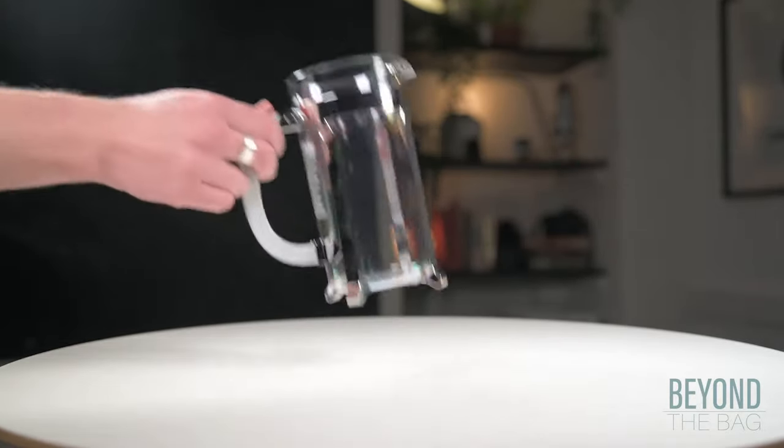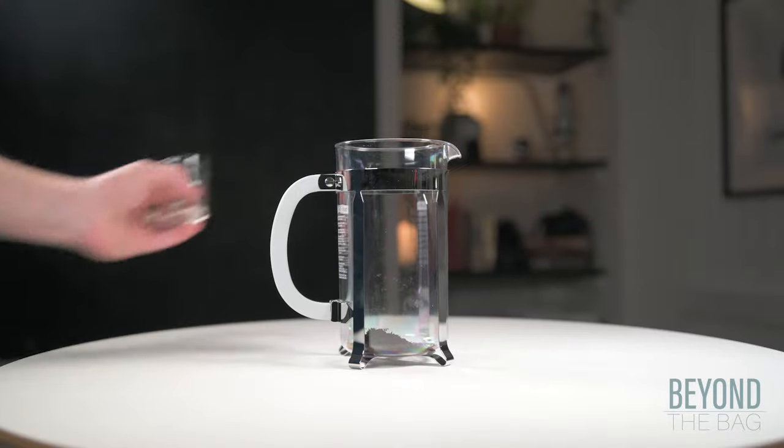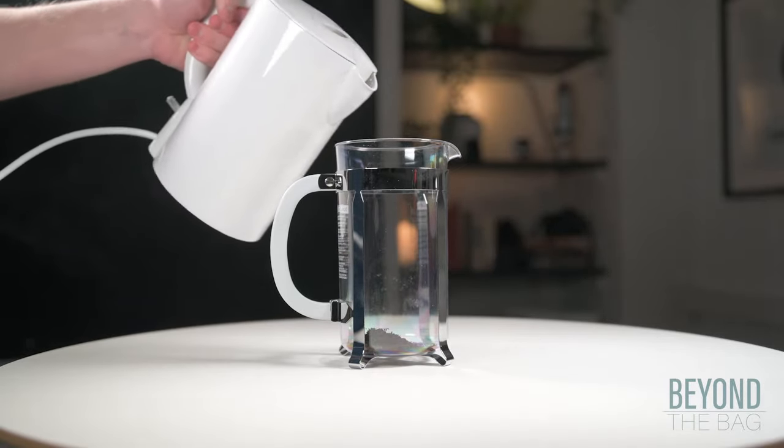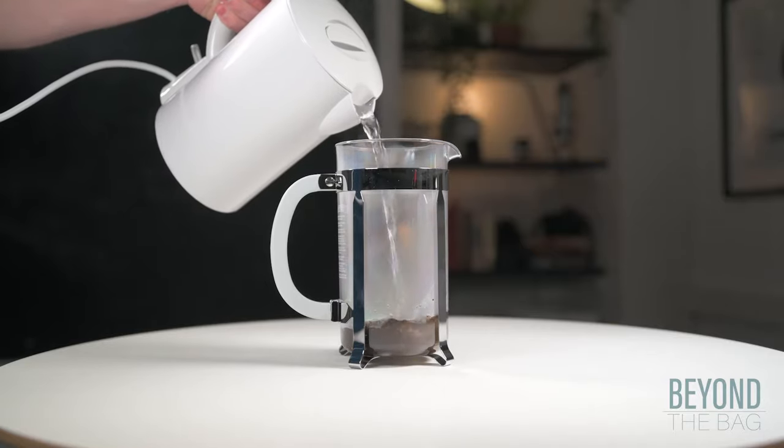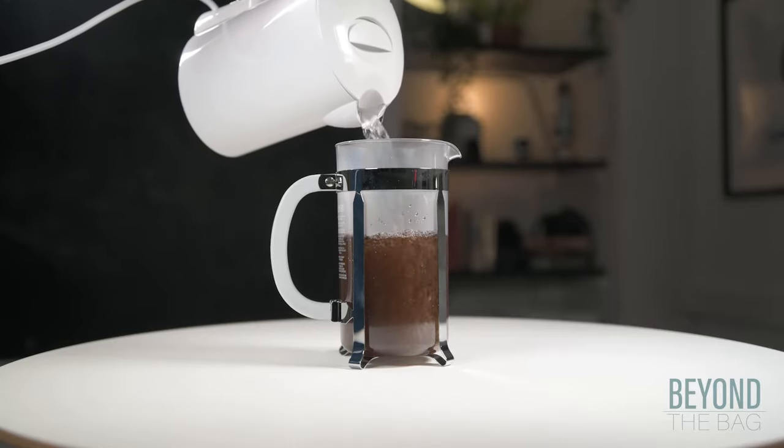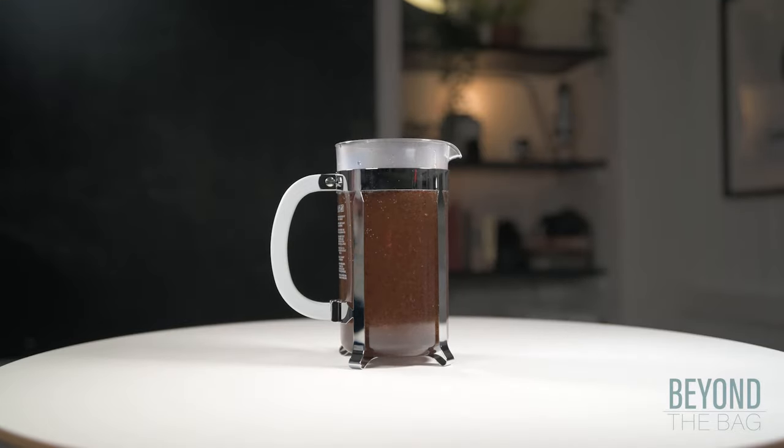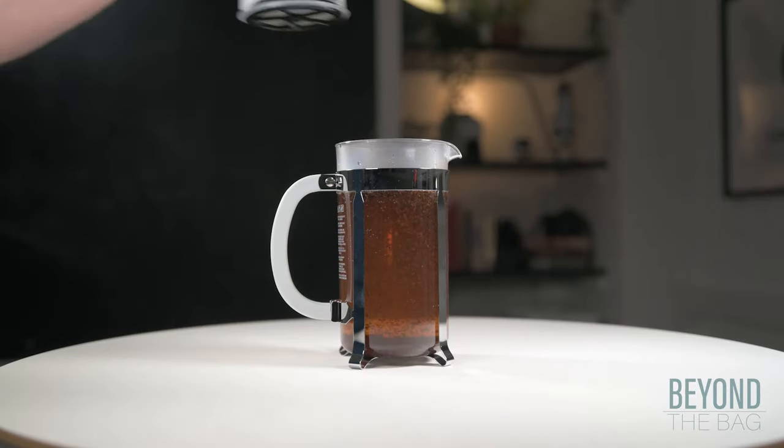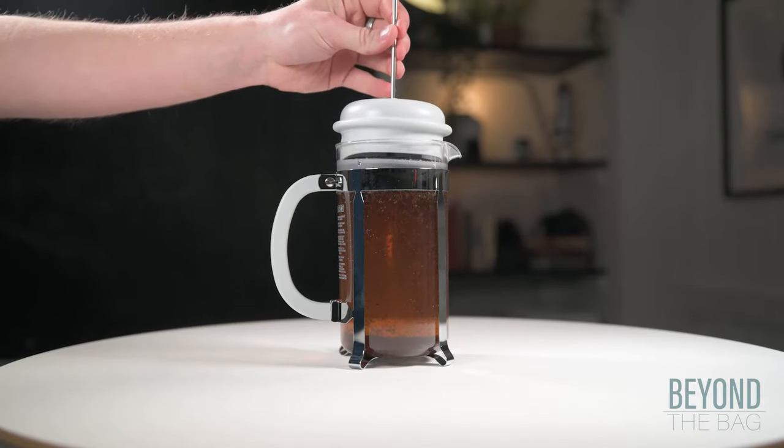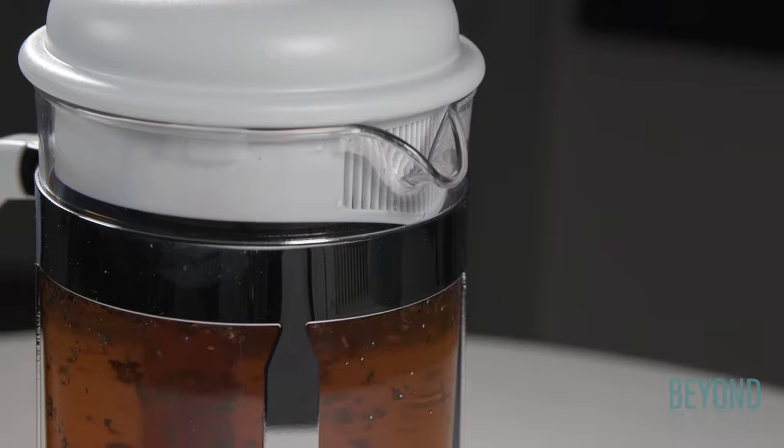Much like a teapot without an infuser, to use, add the loose leaf tea of your choice to the cylinder before dousing in hot water. Place the lid on with the handle pulled all the way up. Allow the tea to swirl and to steep for the recommended amount of time.